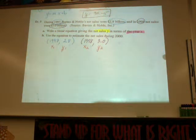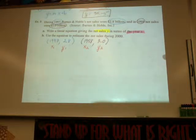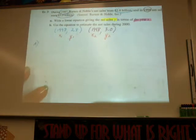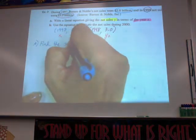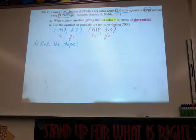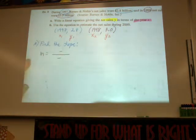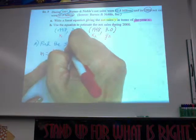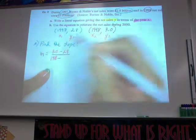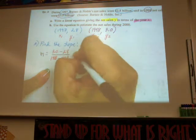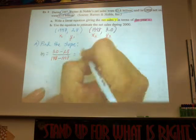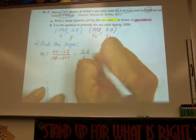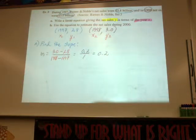This time I don't have a point and a slope — I have two points and no slope. I cannot write an equation unless I have a point and a slope. So the very first step of part a is to find the slope using the slope formula. m equals — substituting in: y sub 2 is 3.0, y sub 1 is 2.8, x sub 2 is 1998, x sub 1 is 1997. What's 3 minus 2.8? That's 0.2 over 1. So my slope is 0.2.